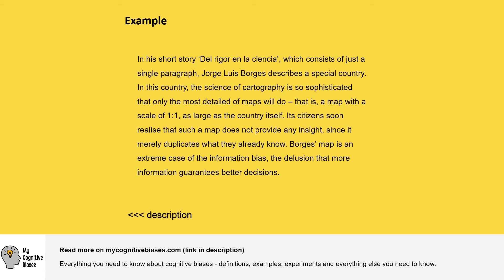Its citizens soon realize that such a map does not provide any insight, since it merely duplicates what they already know. Borges' map is an extreme case of the information bias — the delusion that more information guarantees better decisions.